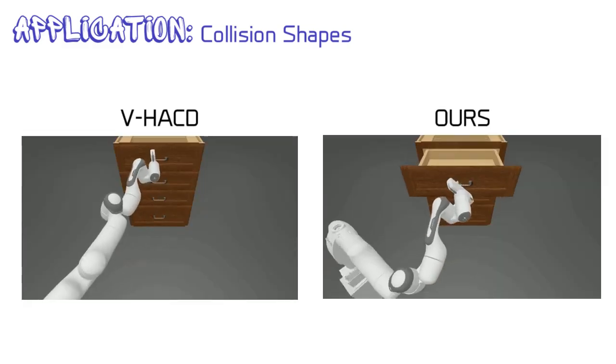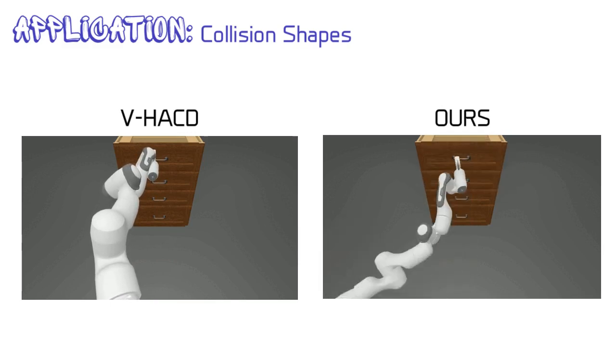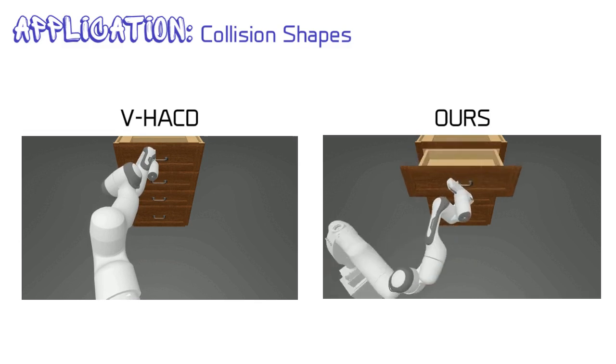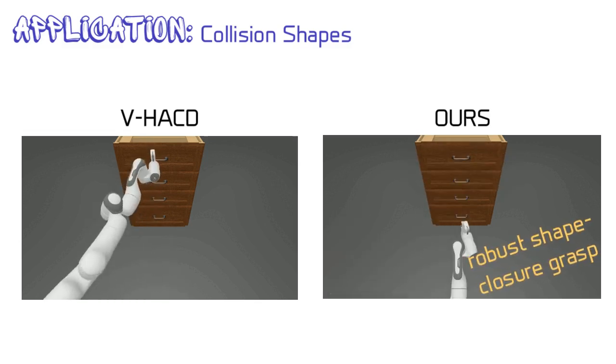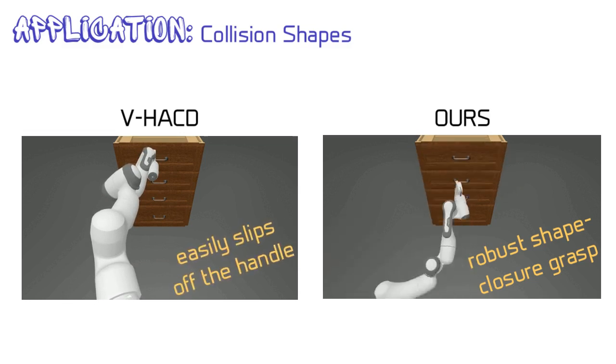Here we show a video comparison. When using our results as collision shapes, which preserve the fine-grained details of the handles, the robot arm is easier to form a robust shape closure grasp. However, when using VHACD's collision shapes, the robot arm easily slips off the handles.